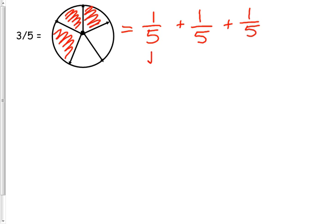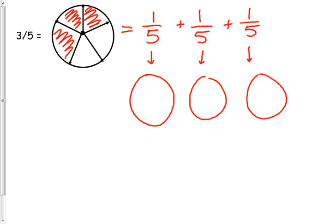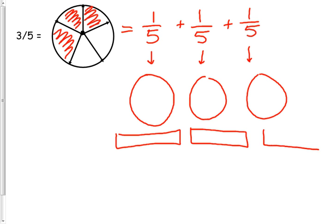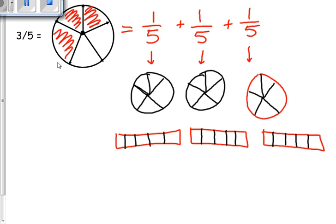Now we need to represent those unit fractions as pictures, so we're putting our two strategies together. I'm going to draw either a pie or a rectangle — in both cases, we are going to split our shape into five parts. You'll see that I now have pictures with fifths, and I'm going to shade in 1 fifth of those pictures to show that I'm representing the unit fraction. So 1 fifth plus 1 fifth plus 1 fifth equals 3 fifths.